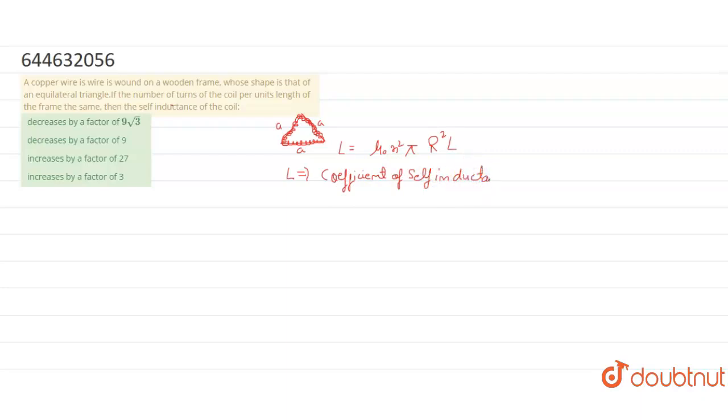N is equal to number of turns per unit length. And here r is denoted by radius of the wire, and L is the length of solenoid.